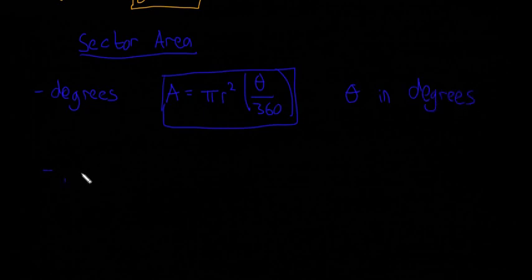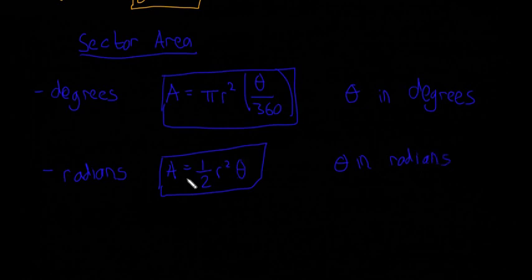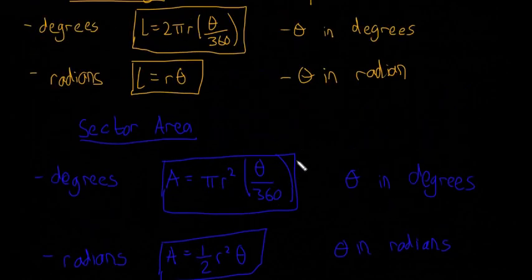Now for radians, A equals ½r²θ. That's all there is to it. They're a bit nicer in both cases. The arc length and sector area formulas are simpler if you use θ in radians. Obviously, if the question gives you θ in degrees, you have to use those formulas, but radians make the formulas easier.